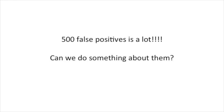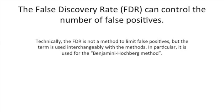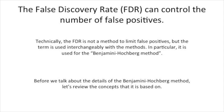500 false positives is a lot. Can we do something about them? The false discovery rate can control the number of false positives. Technically, the false discovery rate is not a method to limit false positives, but the term is used interchangeably with the methods. In particular, it is used for the Benjamini-Hochberg method. Before we talk about the details of the Benjamini-Hochberg method, let's review the concepts that it's based on.